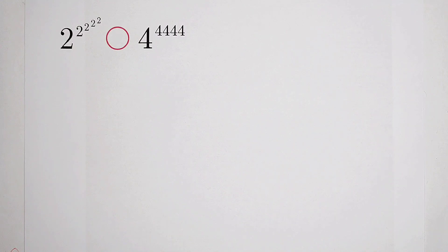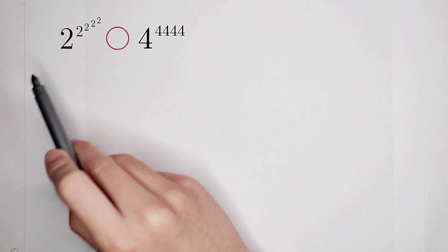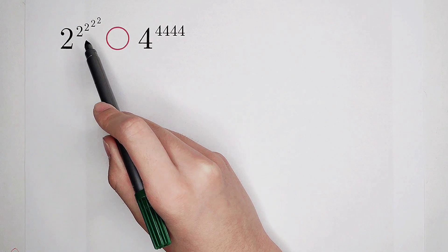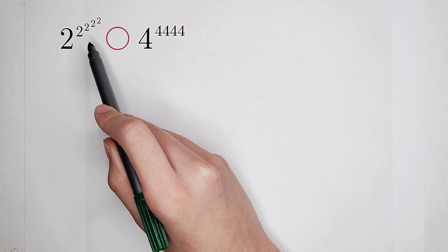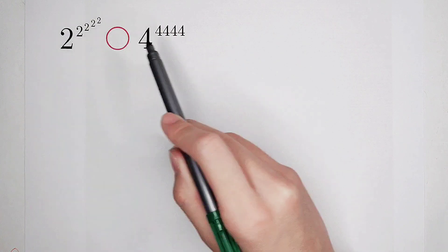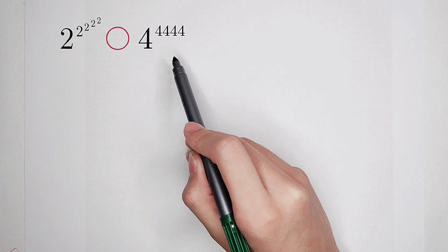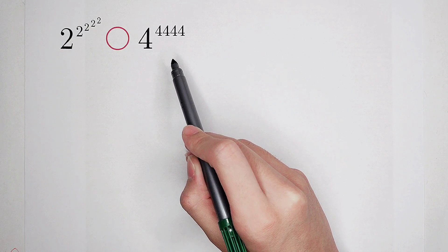Welcome back to MathWino. Which is larger: 2 to the power of 2 to the power of 2 to the power of 2 to the power of 2, or 4 to the power of 4,444?